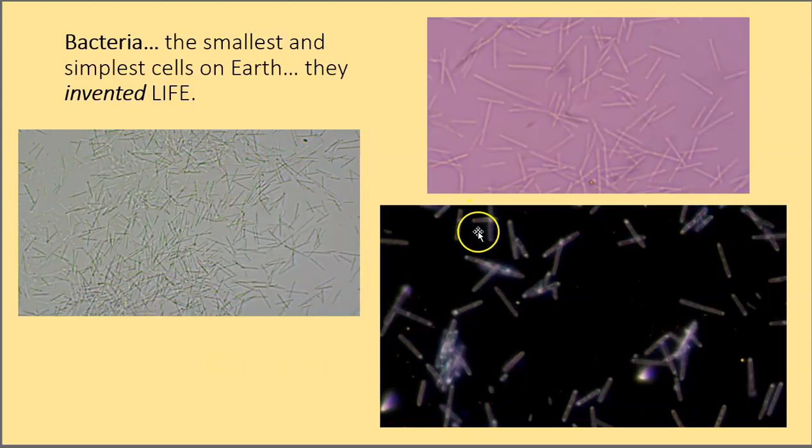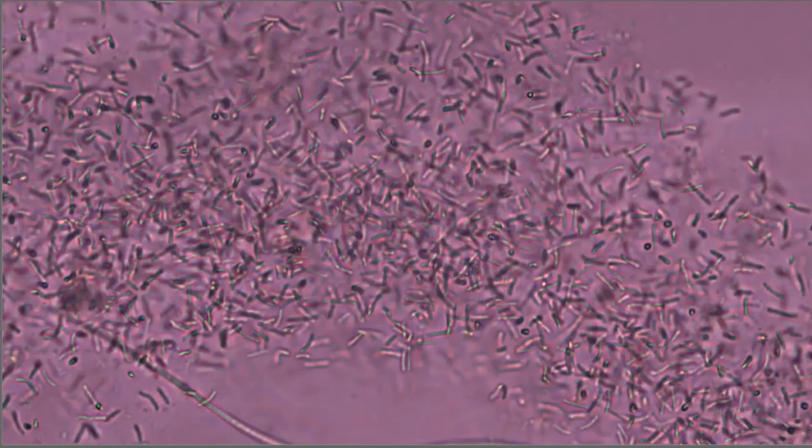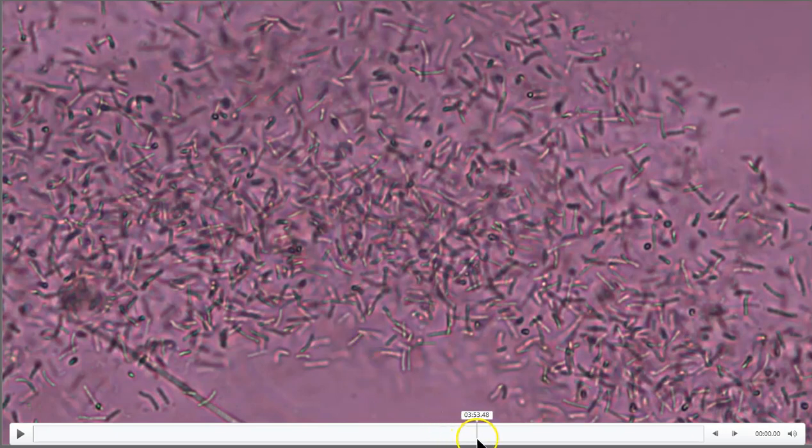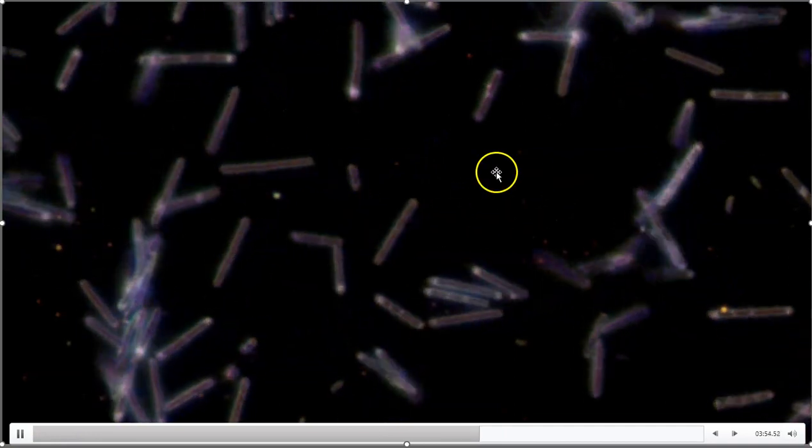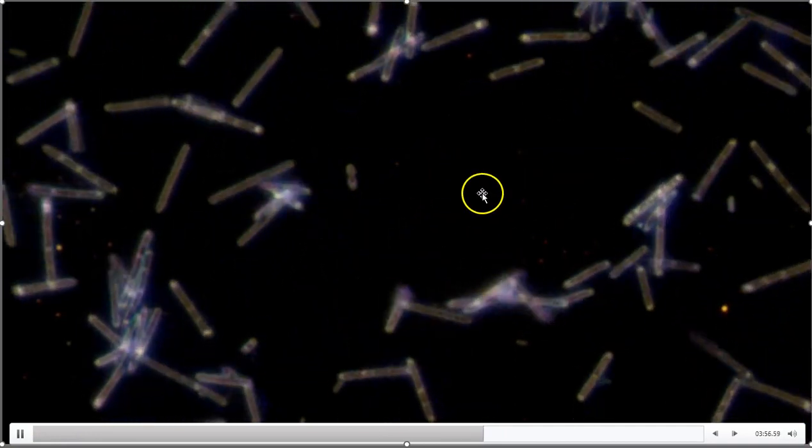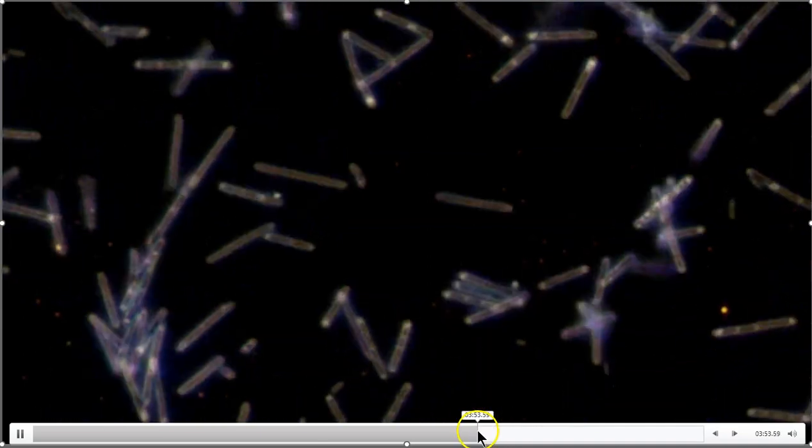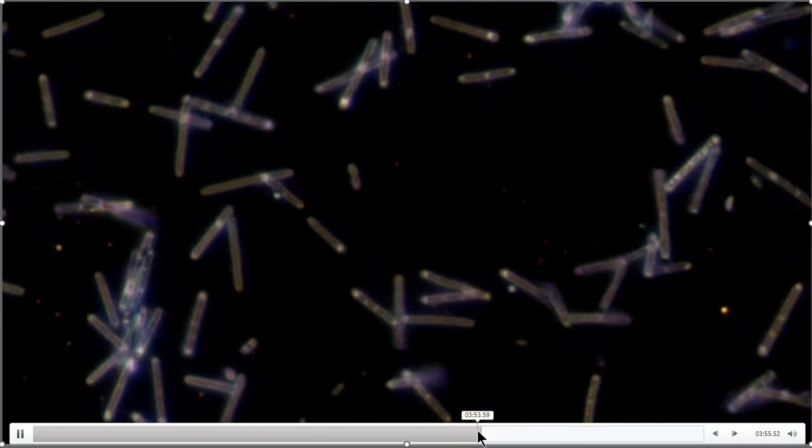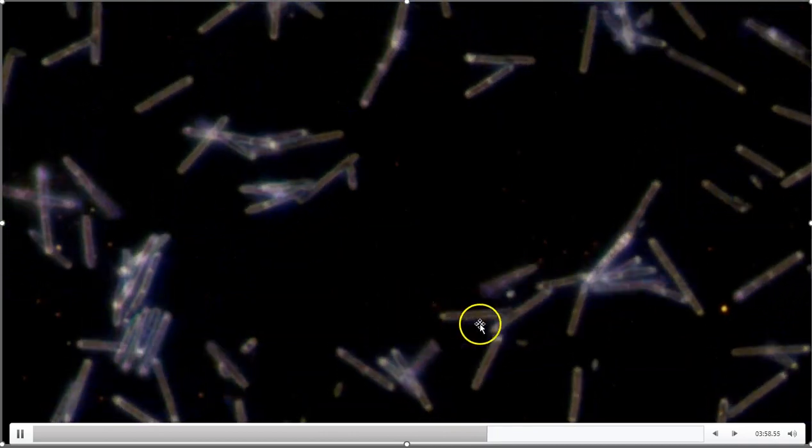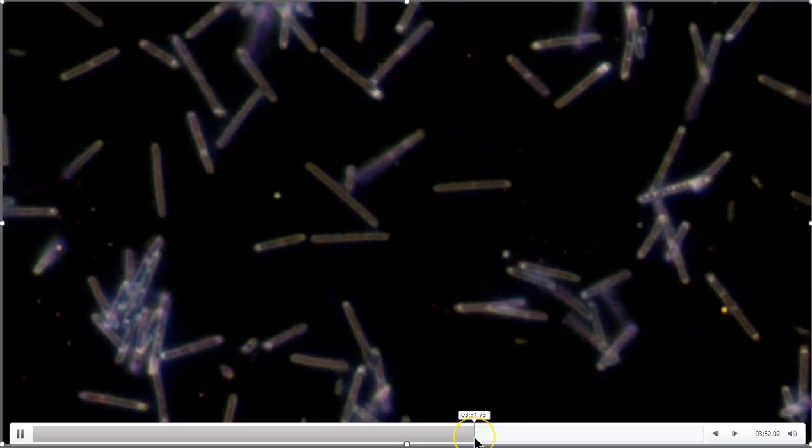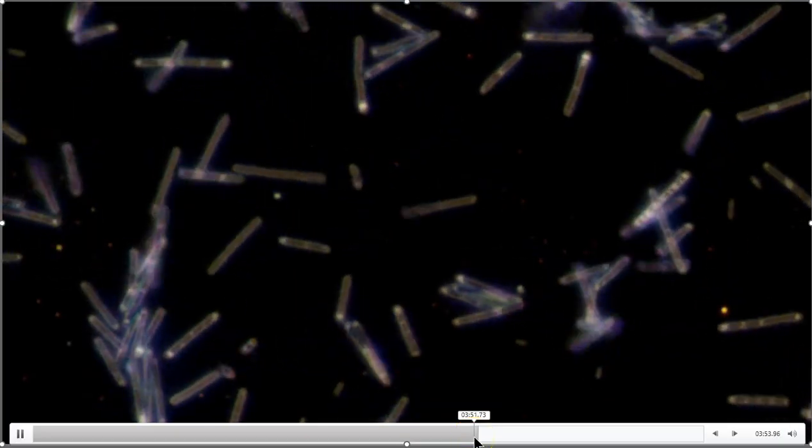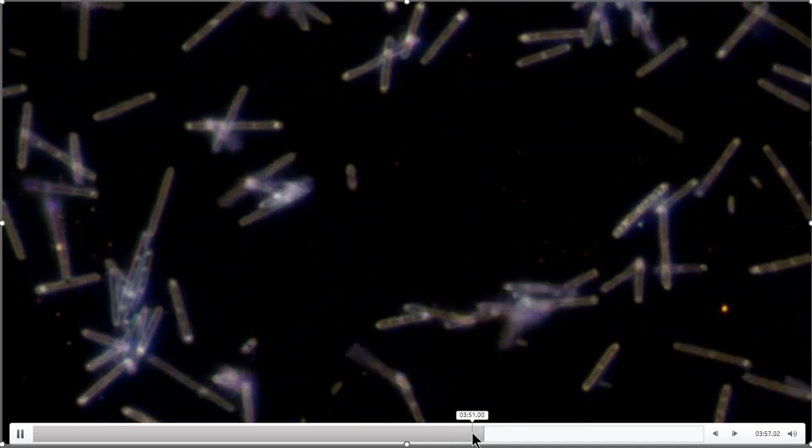Here we see a couple of pictures of bacteria. They're the smallest and simplest cells on Earth, and we will credit them for inventing life. In past videos, we've seen some video of bacteria. Here we're using dark field microscopy, so the lighting is different. We have a dark background, and the cells are illuminated brightly. So these are the creatures that are doing this thing we call life. And they gave rise to all life on planet Earth. That's the story that modern science is putting before us.